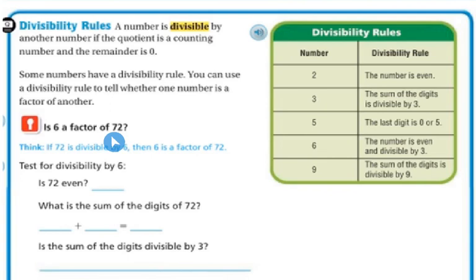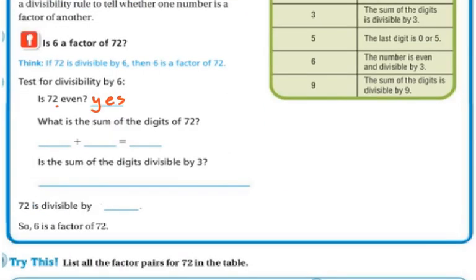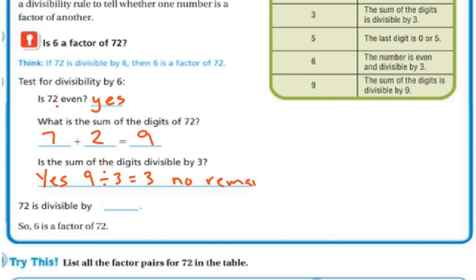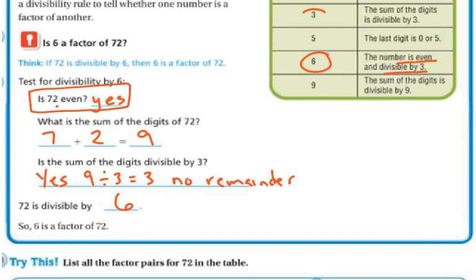So is 6 a factor of 72? If 72 is divisible by 6, then 6 is a factor of 72. Let's test the divisibility rules. Is 72 even? Yes, it ends in a 2, and 2, 4, 6, 8, and 0 are even. What is the sum of the digits? 7 plus 2 is 9. Is 9 divisible by 3? Yes, because 3 times 3 is 9 — 9 divided by 3 equals 3 with no remainder. So 72 is divisible by 6 because it's even and divisible by 3, so 6 is a factor of 72.